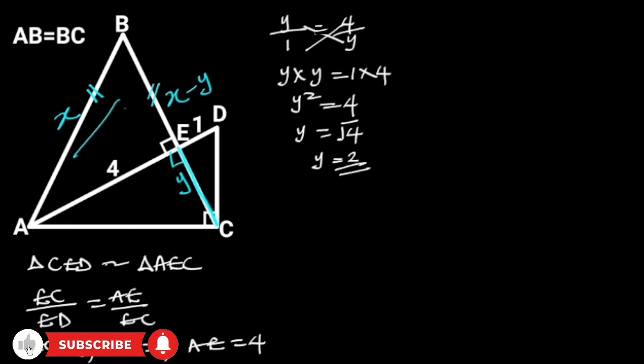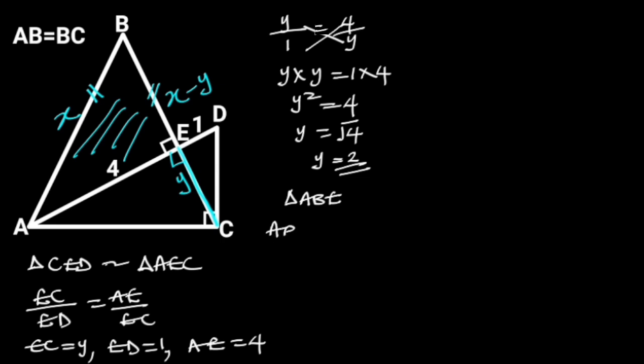Next, let's consider triangle ABE. Triangle ABE is a right triangle. So, from Pythagoras theorem, AB squared is equal to AE squared plus BE squared.